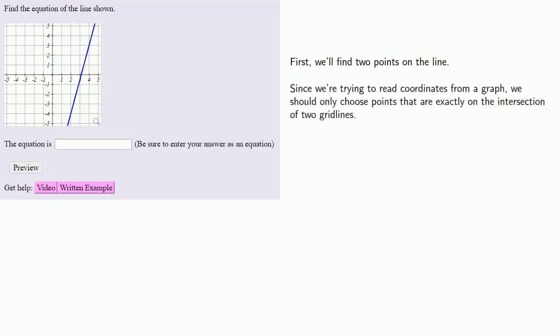Let's try to find the equation of the line shown in the graph. First, we'll find two points on the line. Now here's an important idea. Since we're trying to read coordinates from a graph, we should only choose points that are exactly on the intersection of two grid lines.